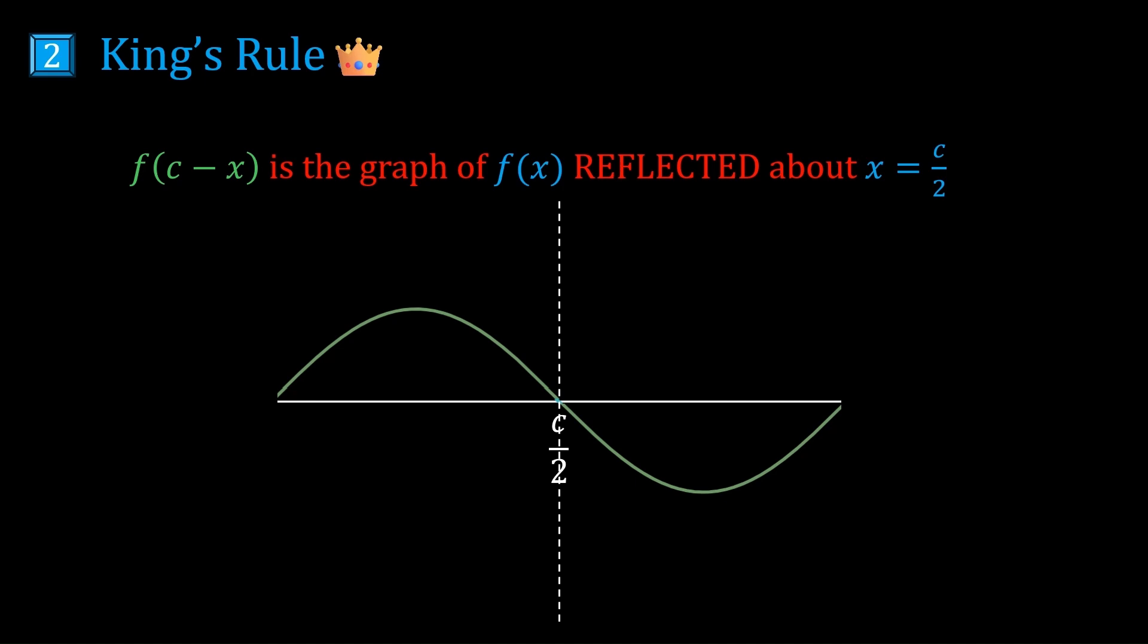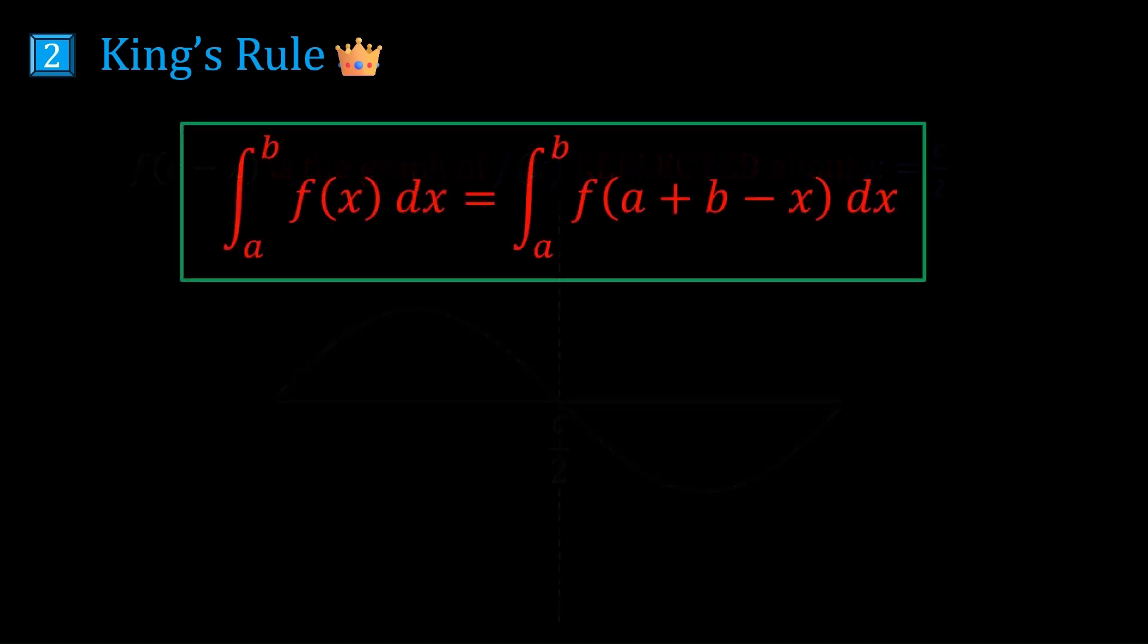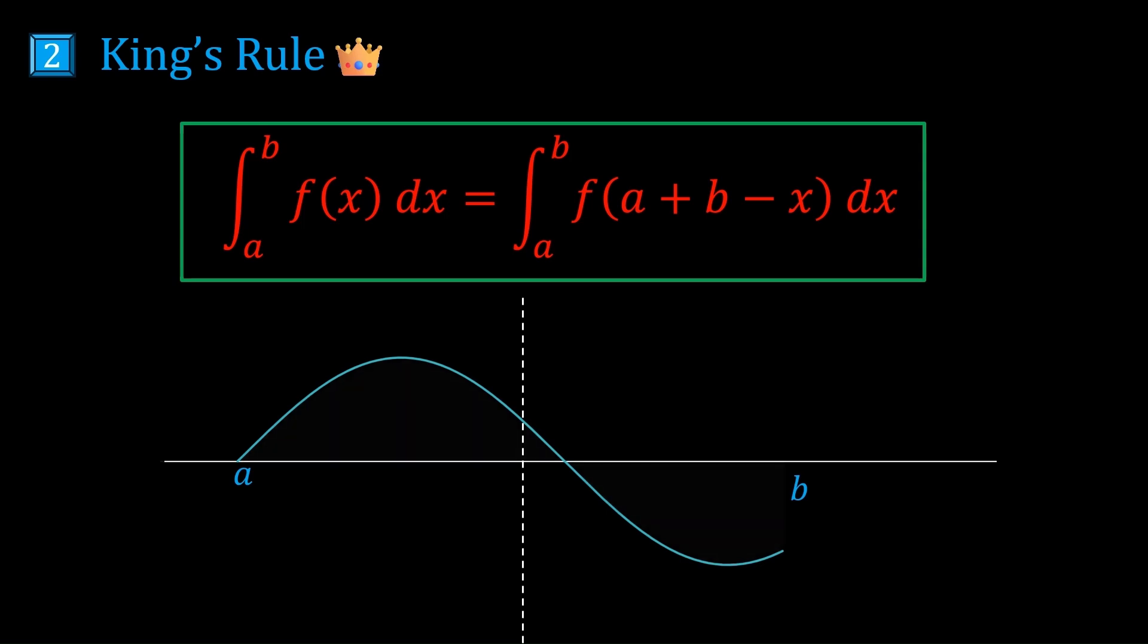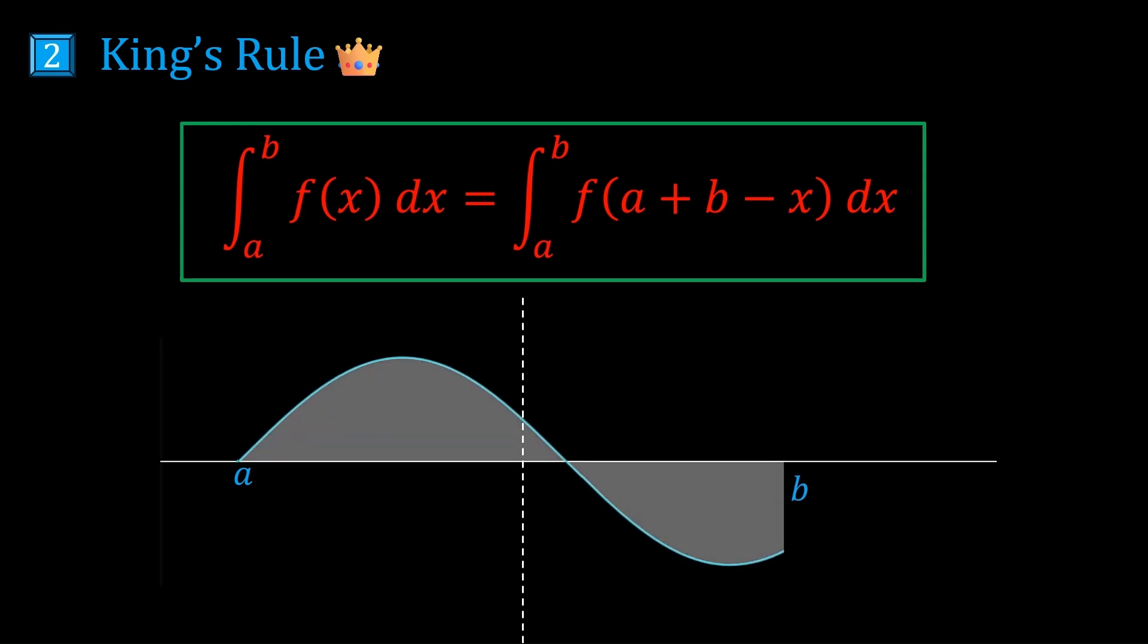You can prove King's Rule using a substitution, or you can just use a nice geometric intuition. So let's say you had this graph which goes from a to b, and you want to find the integral.